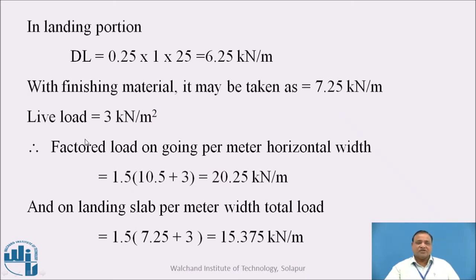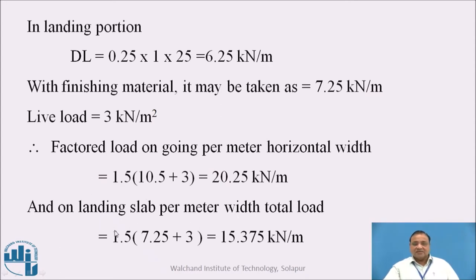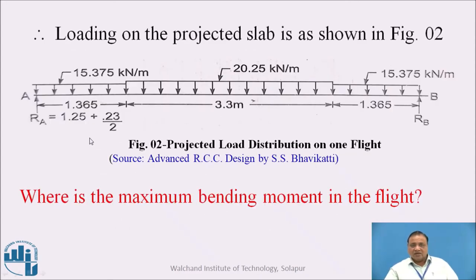The finishing material load assumed is 1 kN per meter. The live load is 3 kN per meter square. The factored load on the going per meter horizontal width is 1.5 into (10.5 plus 3), that is 20.25 kN per meter. The factored load on the landing slab per meter width is 1.5 into (7.25 plus 3), that is 15.375 kN per meter. So in the landing portions we have 15.375 kN per meter, in the going portion of 3.3 meter we have 20.25 kN per meter, and in the mid landing again 15.375 kN per meter.